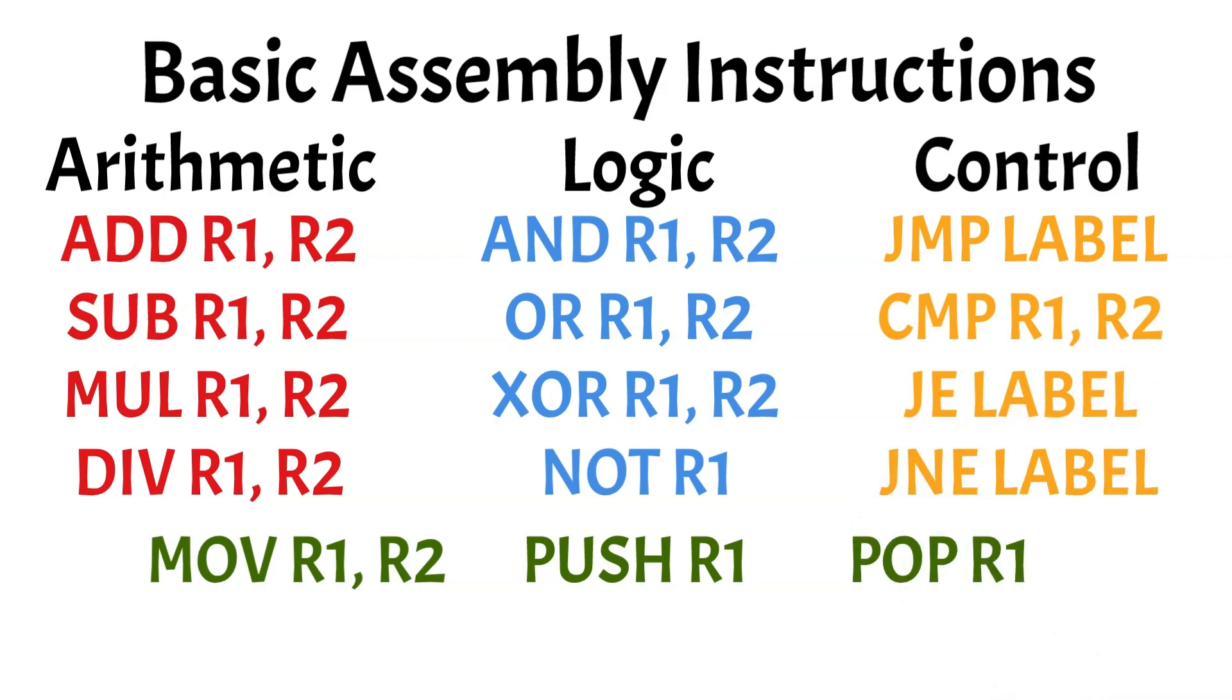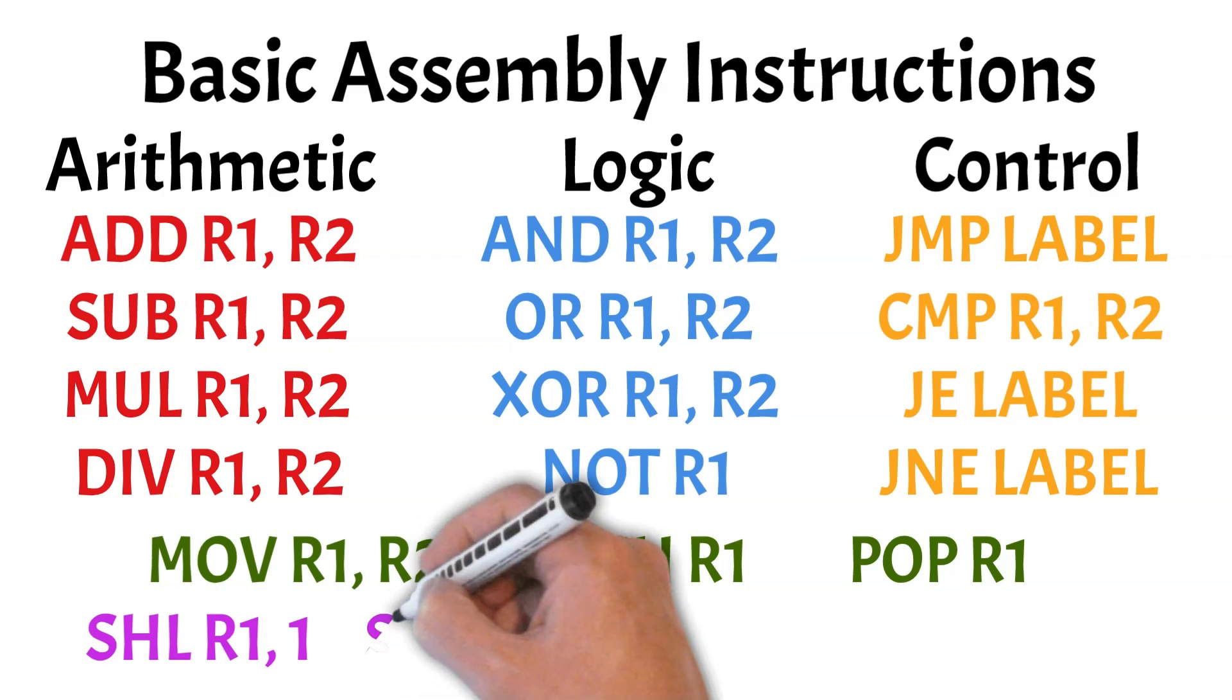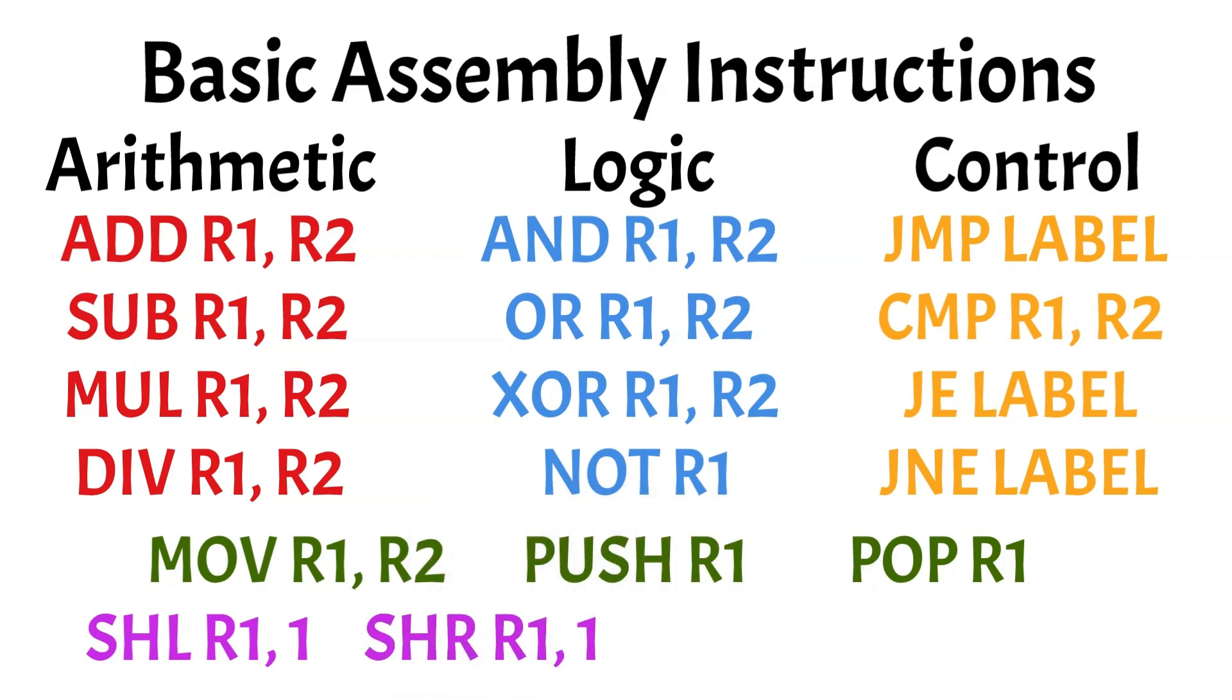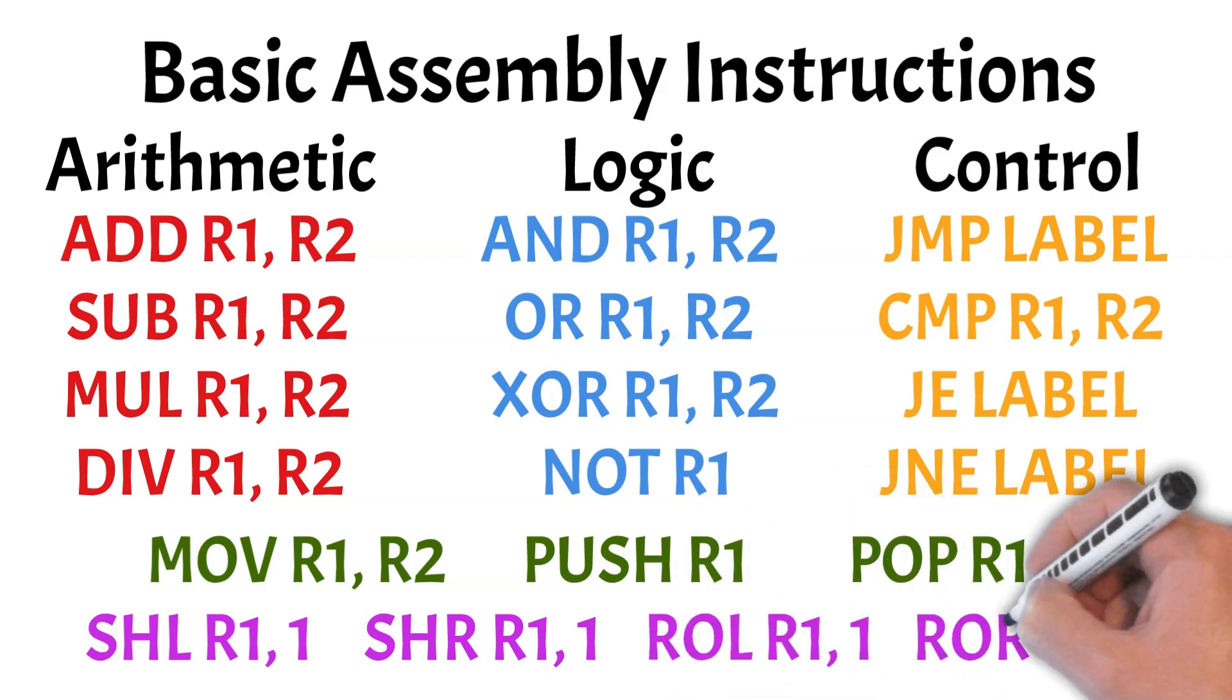Finally, bit manipulation instructions include shift left which shifts register bits left, essentially multiplying the value by 2, and shift right which shifts right, dividing the value by 2. Rotate left and rotate right rotate bits left or right, looping them back around. These instructions allow precise control over data, arithmetic, and program flow in assembly programming. Keep in mind that there are even more instructions available in assembly, providing further capabilities for developers.